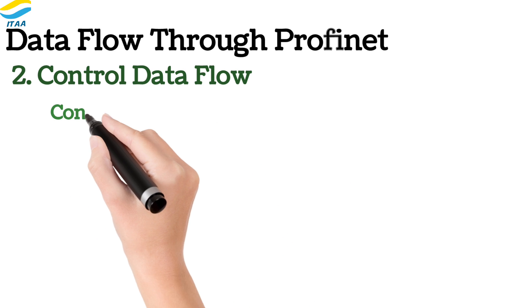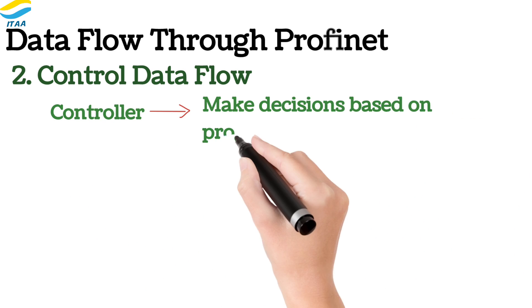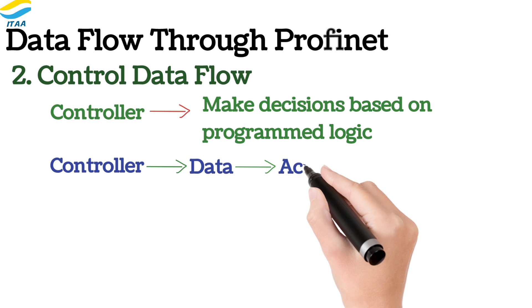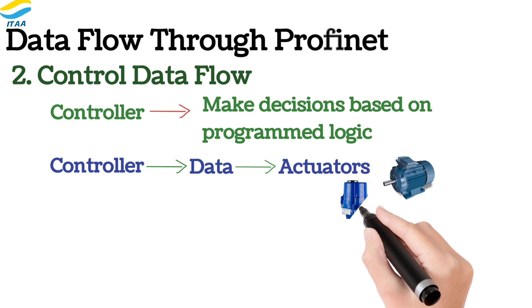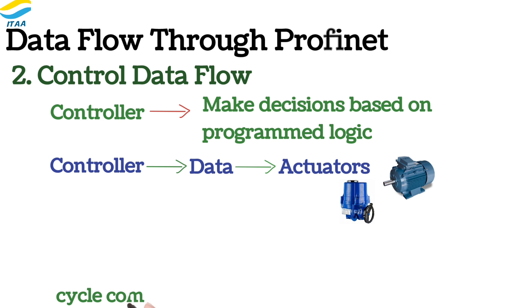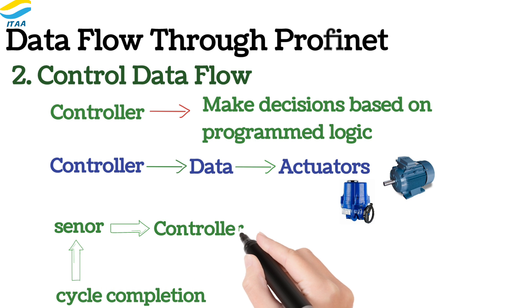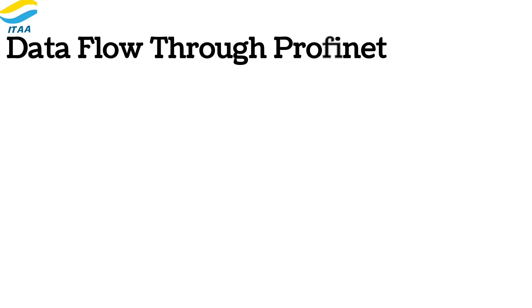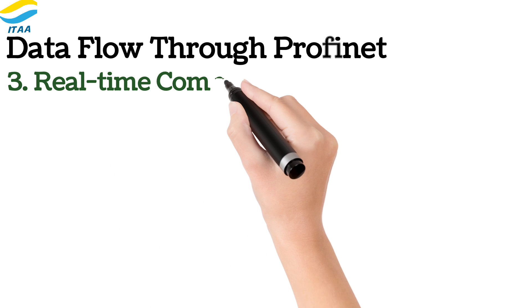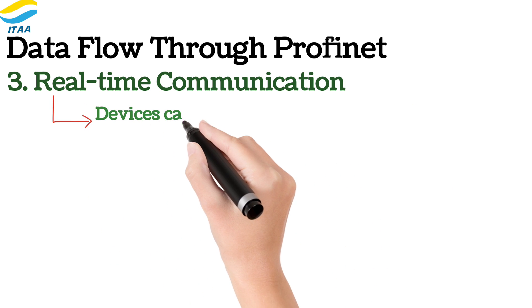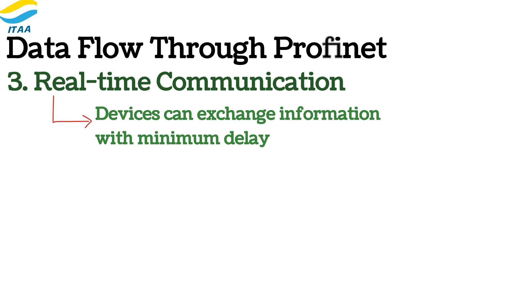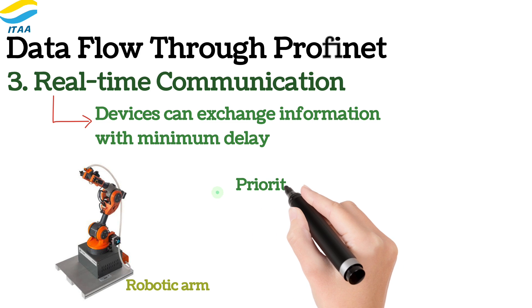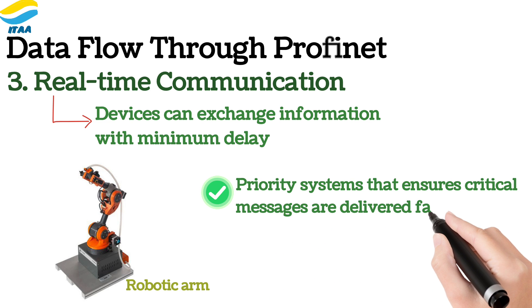Once the controller receives sensor data, it processes this information to make decisions based on the programmed logic. The control data generated by the controller is then sent to actuators or output devices. Actuators could be motors, valves, or other machinery responsible for physically carrying out commands. For example, if a sensor detects that a machine part has completed its cycle, the controller can send a command to the motor to either start a new cycle or stop the machine. One of the key strengths of PROFINET is its ability to handle real-time communication, meaning devices can exchange information with minimal delay — critical in processes requiring synchronization such as motion control or robotics. PROFINET uses a priority system that ensures critical messages are delivered faster than non-essential data.